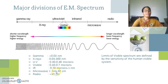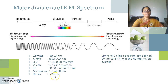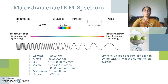Coming to the infrared region, it ranges between 0.7 microns to 1 millimeter. The microwave region ranges between 1 millimeter to 30 centimeters, and radio wave frequencies are greater than 30 centimeters. Of course, the limits of the visible spectrum are defined by the sensitivity of the human visual system.